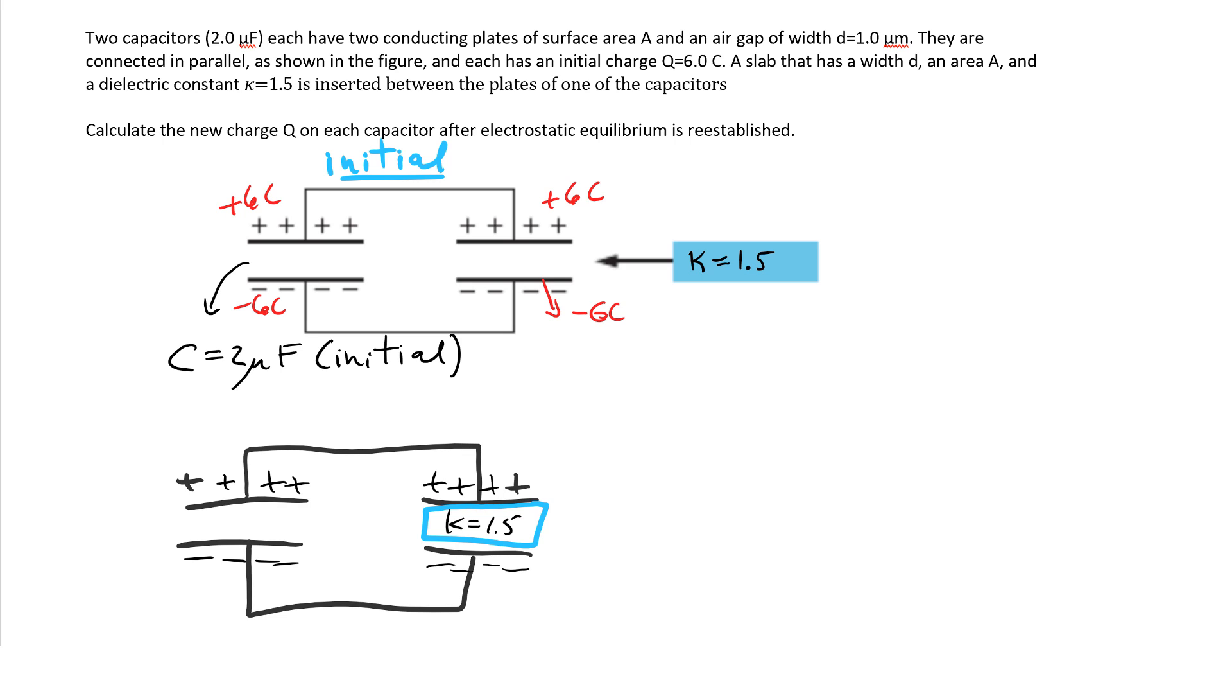The best way to tackle this problem is to see what's going to change after I insert this dielectric constant. One thing you should know that always changes is the capacitance of the capacitor. On the right-hand side, initially it's 2 microfarads. After, the capacitance is going to change and the value is going to be κ, the dielectric constant, times the initial capacitance which is 2. So in this case it's 3/2 times 2 microfarads, which gives 3 microfarads as the final capacitance of the right-hand side.